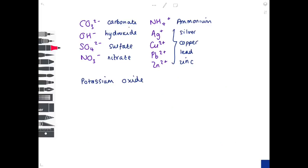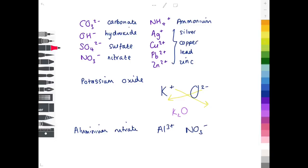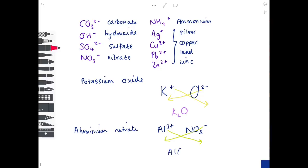There is a 'swap and drop' shortcut: write out the ions, then swap and drop the numbers as subscripts. For example, potassium (K⁺) and oxygen (O²⁻) gives K₂O. For aluminium nitrate: aluminium is group three (Al³⁺) and nitrate is NO₃⁻ — swap and drop gives Al(NO₃)₃, bringing the 3 down as the subscript.